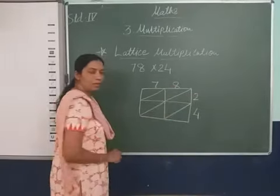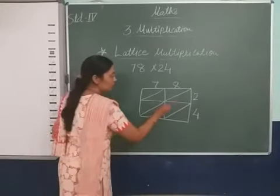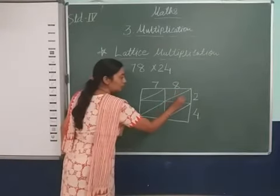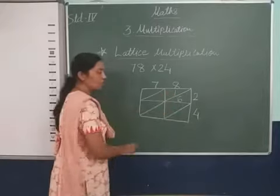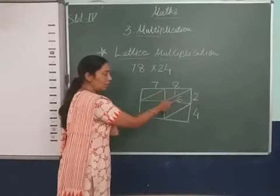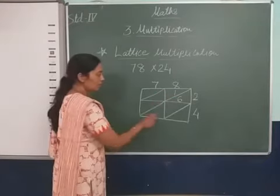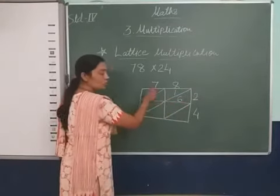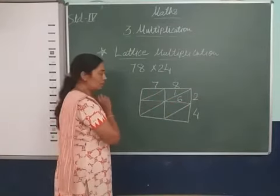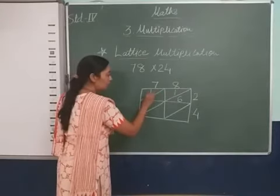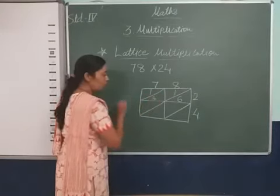2 into 8: 2 eights are 16. So 1 and 6. The tens will come here and 1 will come here: 16. Now 2 into 7: 2 sevens are 14. 1 will come here, 4 will come here.